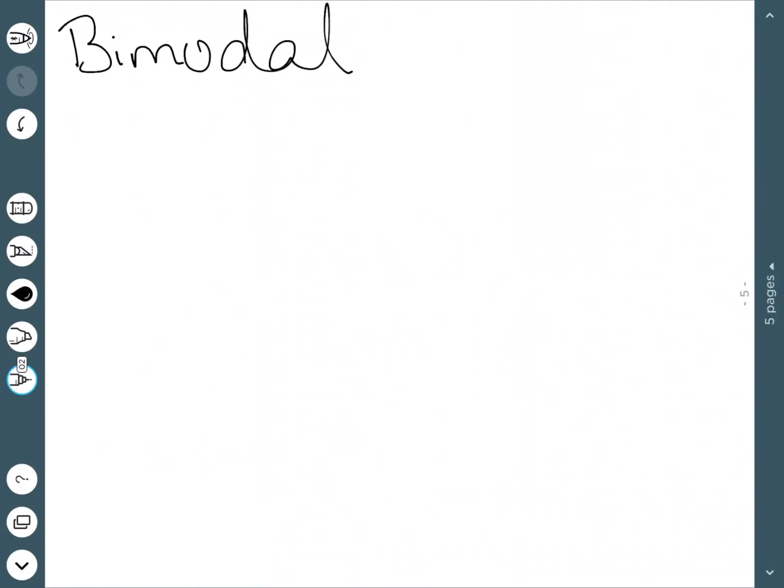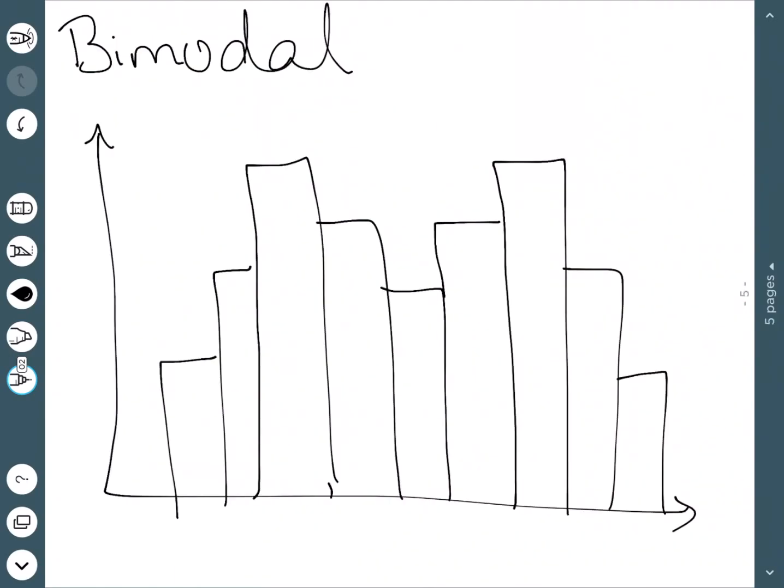The next distribution is called bimodal. Bimodal distributions have two peaks that are either the same or very close to being the same. And the important thing is these peaks need to be separated by at least one class. In my example, I have three classes between them, but the main thing is these two peaks can't be literally right next to each other.